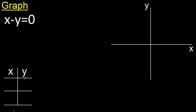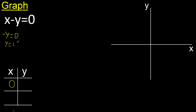Here any number, for example x is 0. Therefore 0 minus y is minus y equals 0, therefore y equals 0.